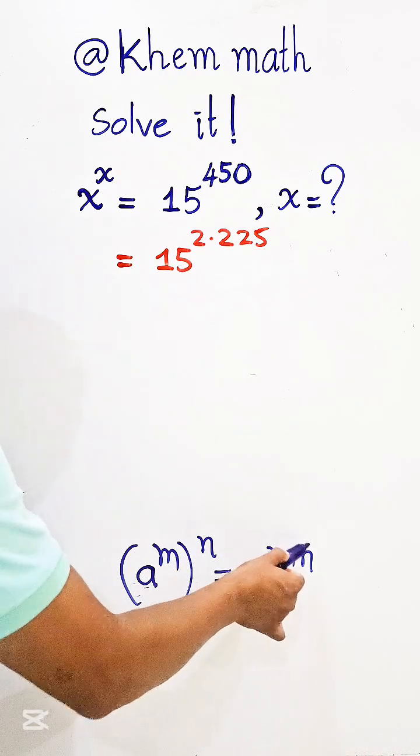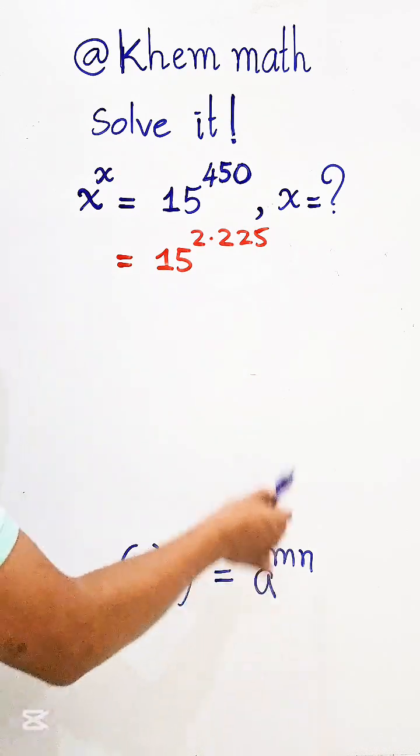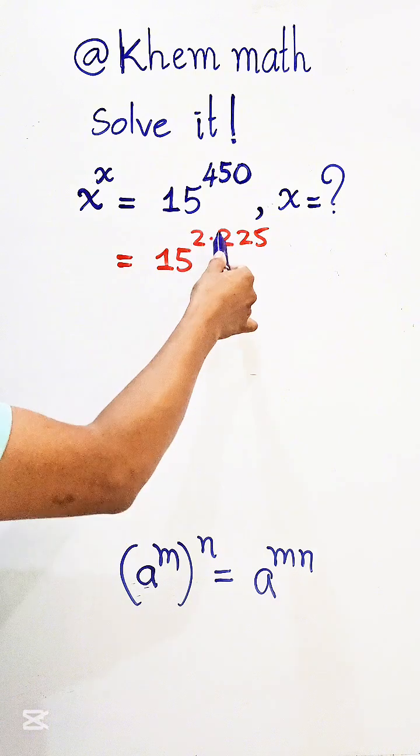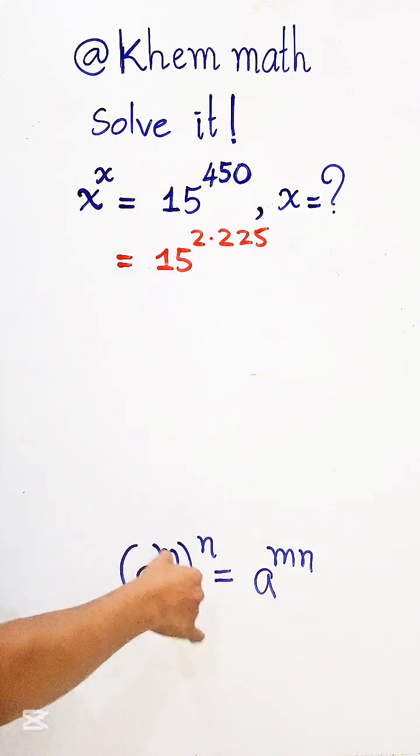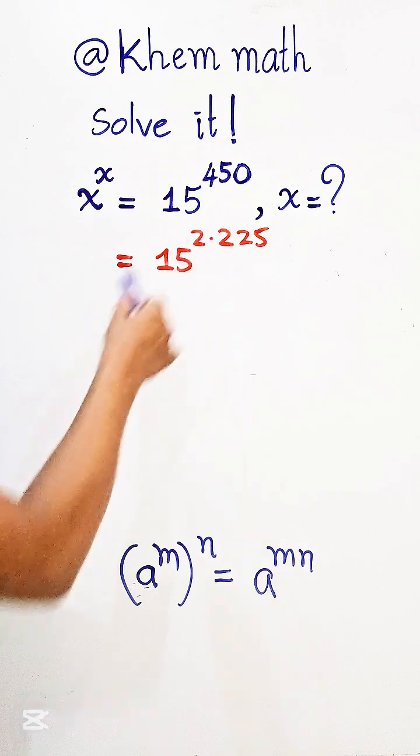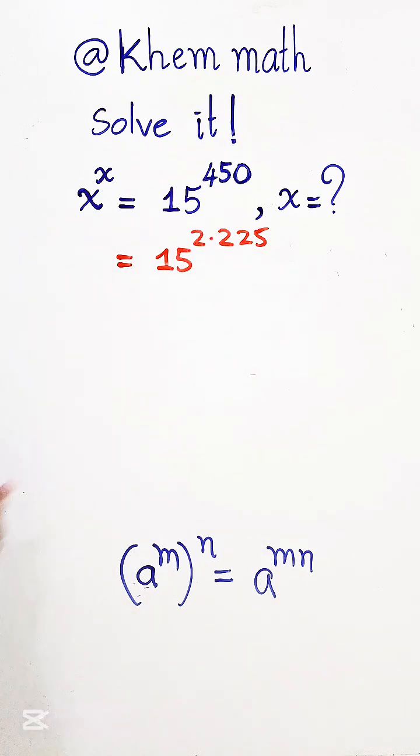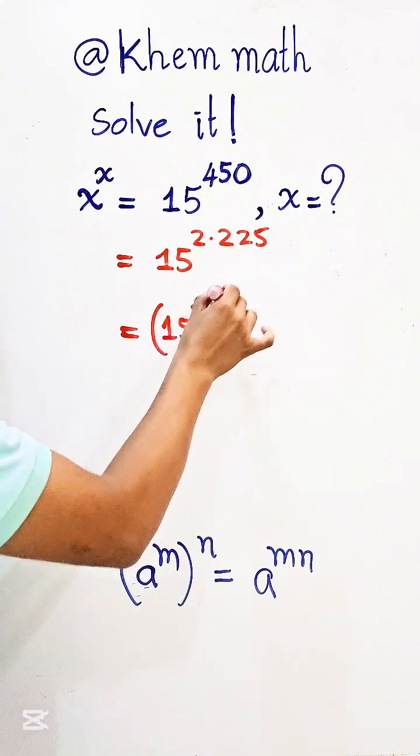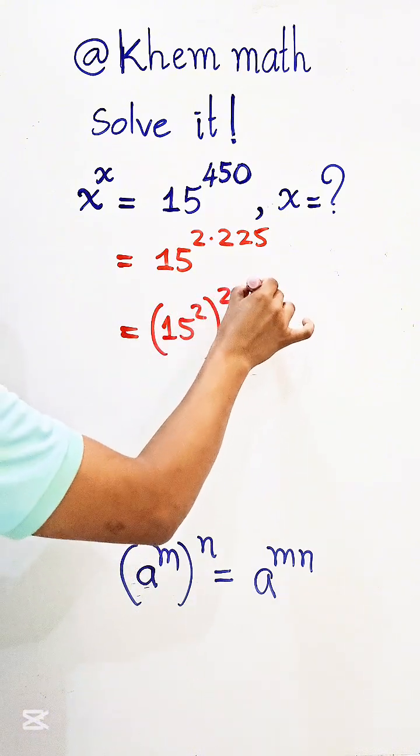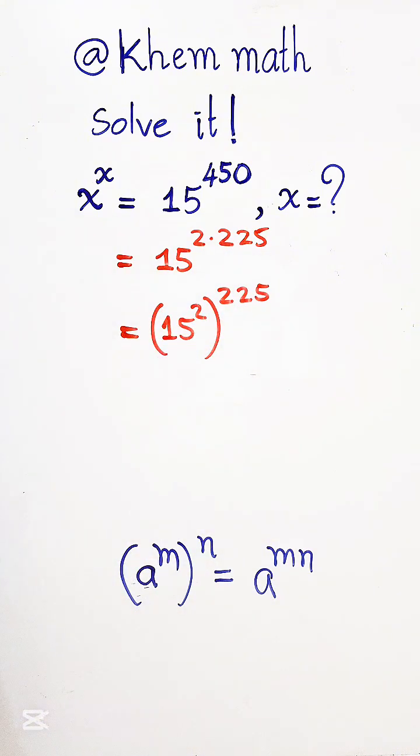So now we have a power m times n like this. So we can write it, a power m all power m. So here is, can be write it equal 15 square all power 225.